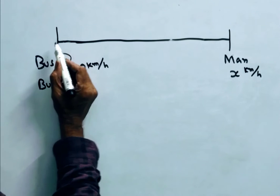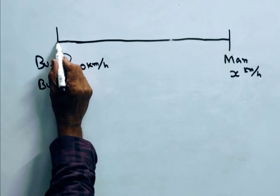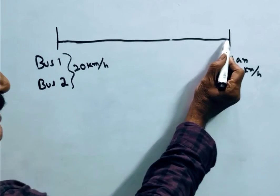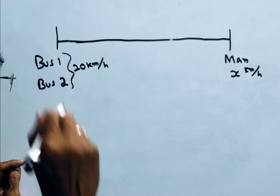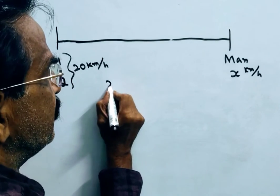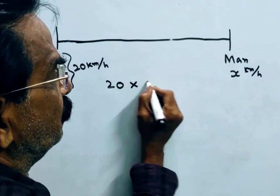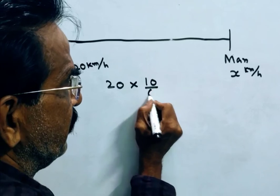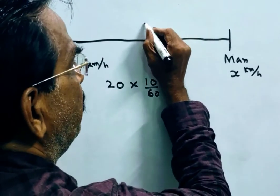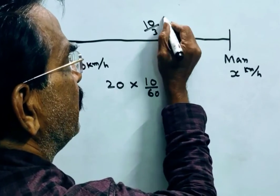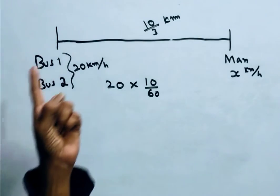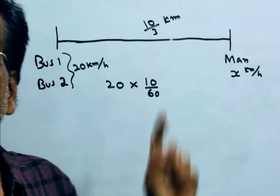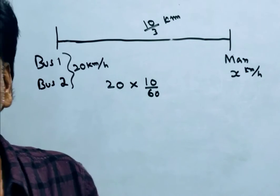Now first bus started from the terminal towards this direction. In 10 minutes, what is the distance travelled by this first bus? Distance is equal to velocity into time, 10 by 60, 2 3s, 10 by 3 km. So the first bus travelled 10 by 3 km in 10 minutes.